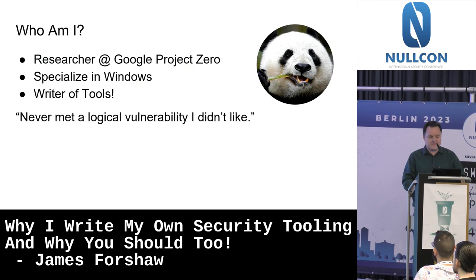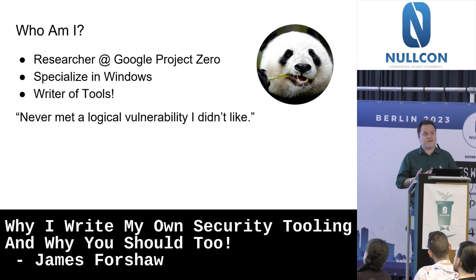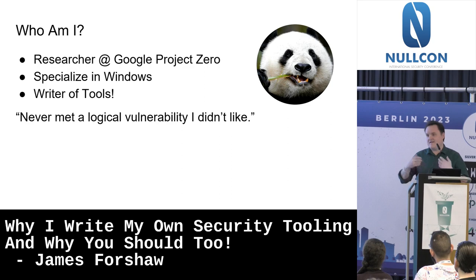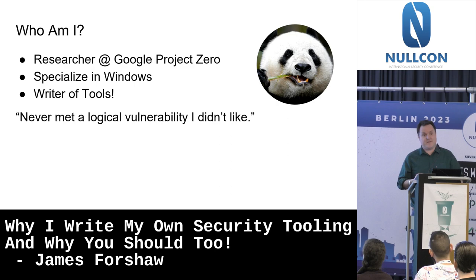For the people who don't know me, I'm James. I'm a security researcher at Google Project Zero. Google Project Zero is a team at Google who looks primarily at third-party applications and tries to find security vulnerabilities, then gets them fixed by the vendor as quickly as possible under a 90-day disclosure deadline. My specialization is Windows. And as part of that, I write a lot of tooling. My history in the industry is I started as a developer, and it was only later that I came into security. I've got a lot of experience writing computer software and building tools.